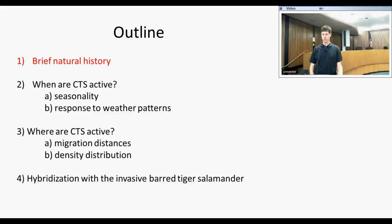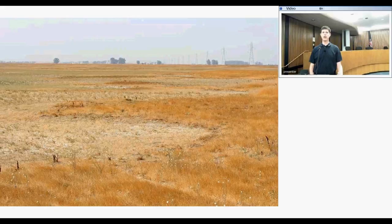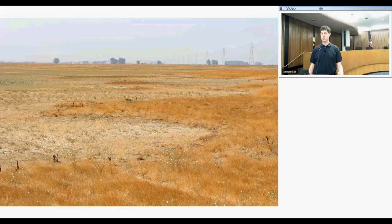Starting with natural history: California tiger salamanders primarily breed in temporary breeding ponds. This is a photograph of the northern shore of Olcott Lake, where I did most of my research. When it's full, Olcott Lake is the largest remaining breeding pond available to tiger salamanders, getting up to 33 hectares. But if you go out there between July and October, you'll just find a dry pond bed.